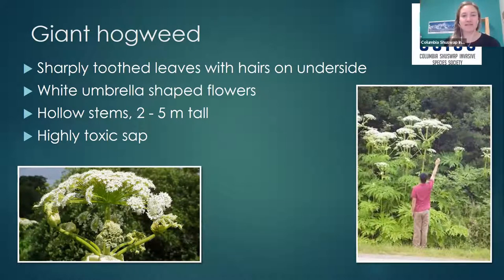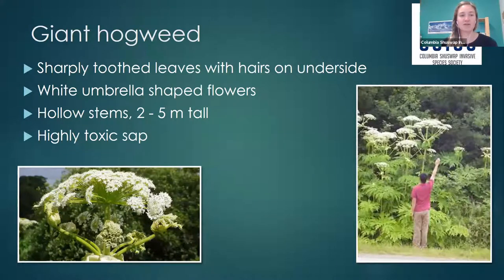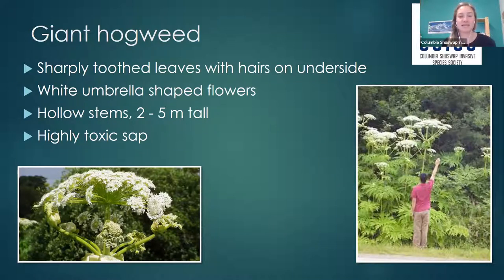The first plant we're going to go over is Giant Hogweed. It has sharply toothed leaves with hairs on the underside and white umbrella-shaped flowers with hollow stems. It can grow two to five meters tall, making it quite a large plant, and it has highly toxic sap. The sap is phototoxic — if you get it on your skin and then go out in the sunlight, you get severe sunburns. It's really important to be cautious if you're working with this plant.